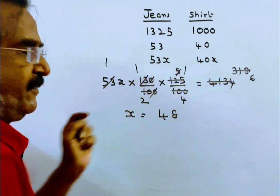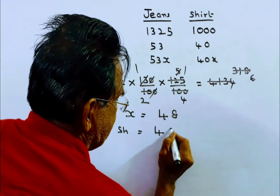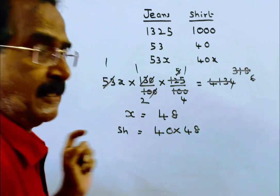Now the cost price of the shirt is 40X. So the cost price of the shirt is 40 into 48. This is the cost price of the shirt.